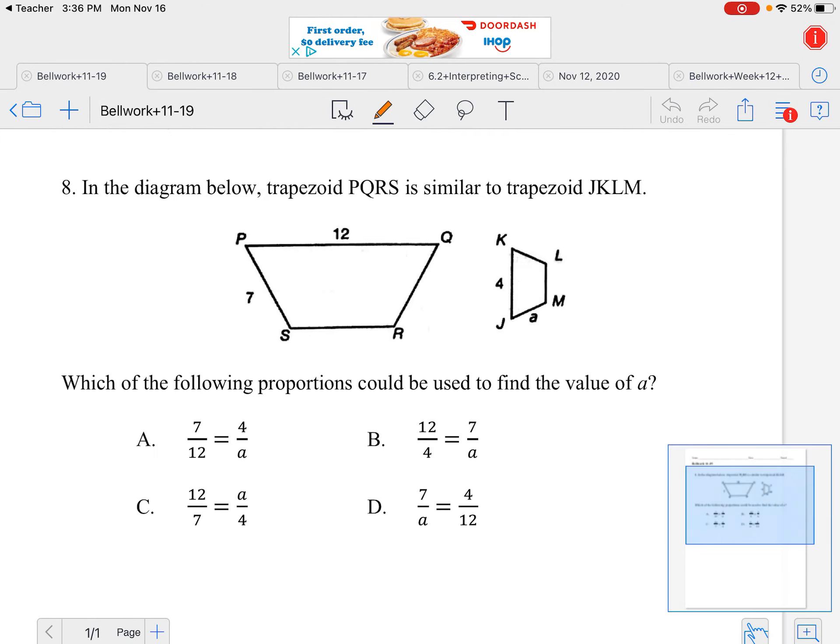Today's bell work says in the diagram below, trapezoid PQRS is similar to trapezoid JKLM, and then we have the two figures. It says which of the following proportions could be used to find the value of a?